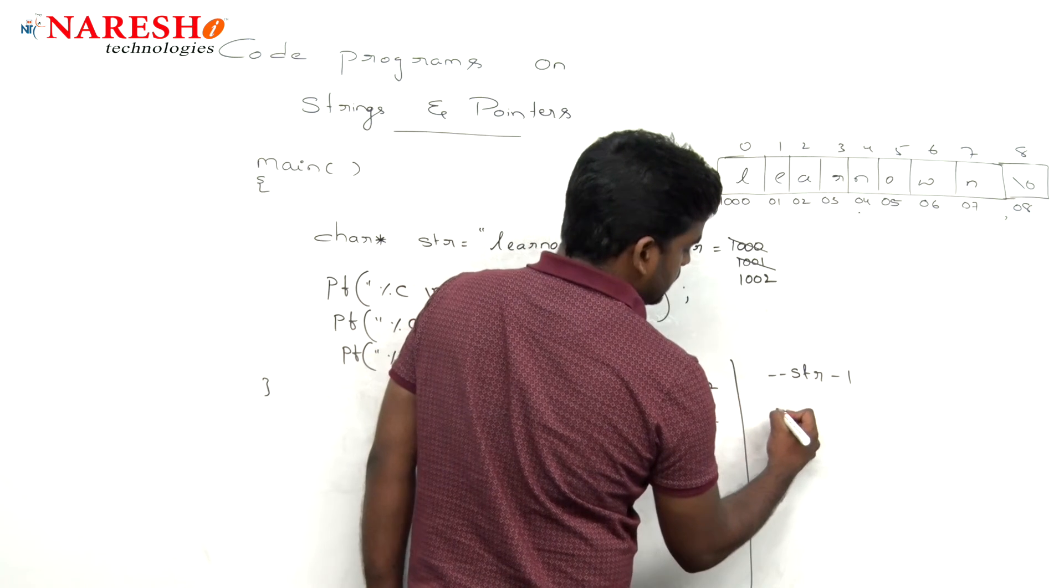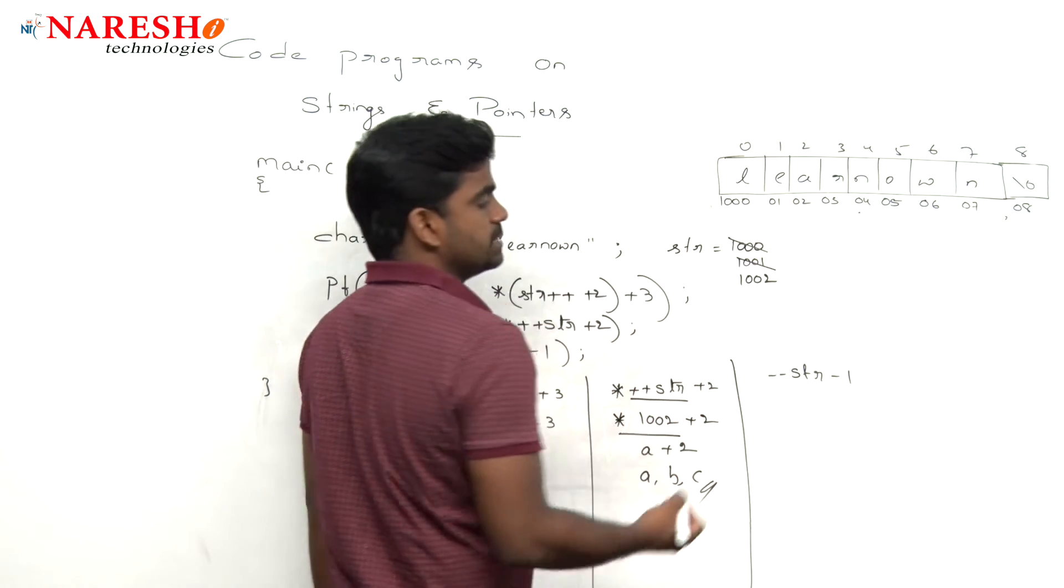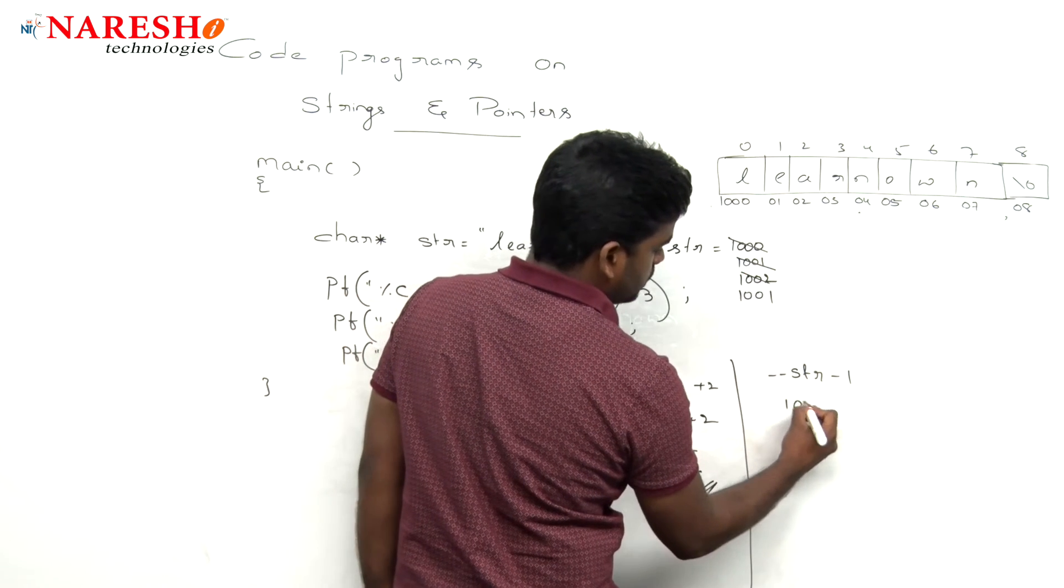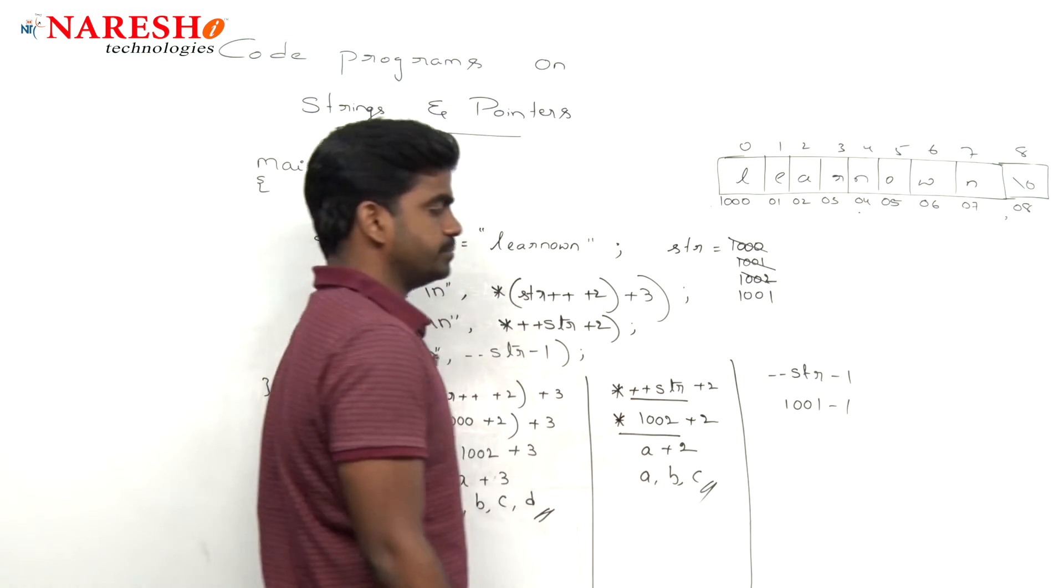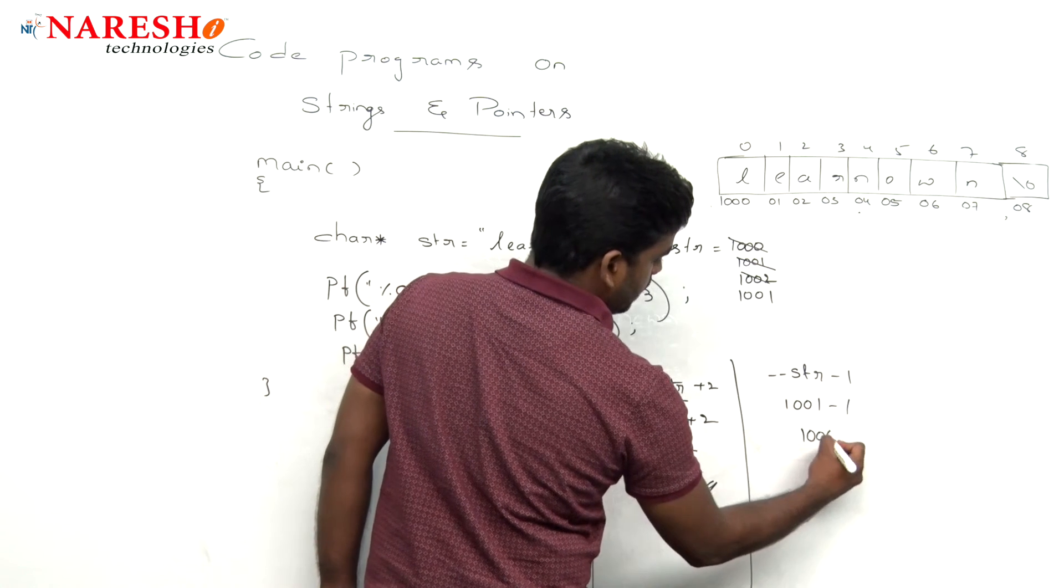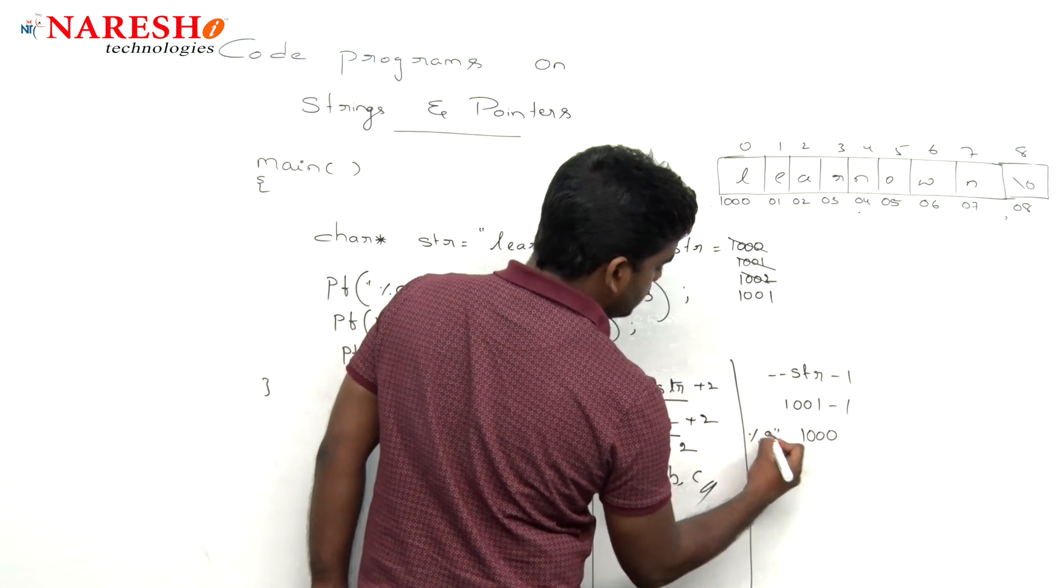And next one, here it is pointer --str. The value will decrease by 1, thousand and 1 minus 1, thousand and 1 minus 1. The value is what?